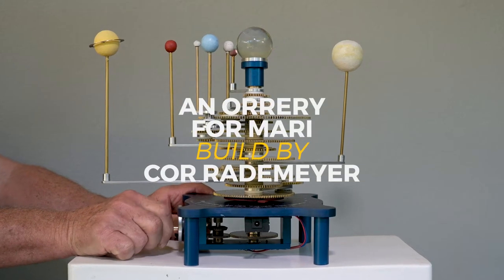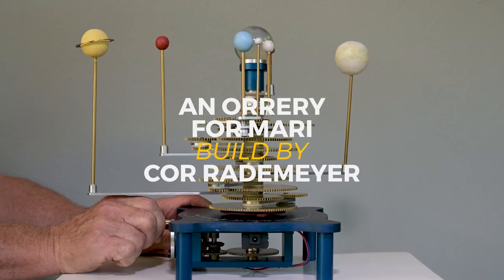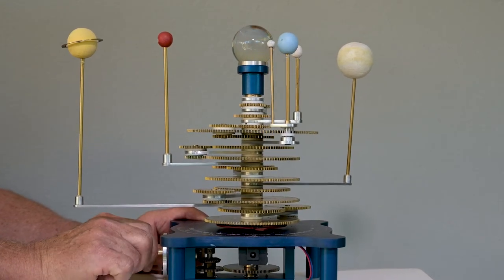This is an orrery that I built for my daughter Marie. It is a mechanical model of the solar system, including the six inner planets.